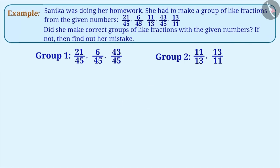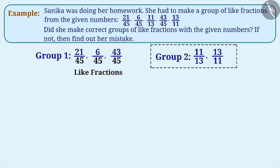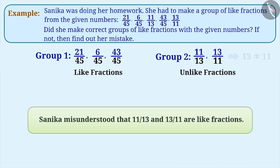We call two or more than two fractions as like fractions when their denominators are equal. In the first group, we can observe that denominators of all the fractions are equal. Therefore, the fractions in the first group are like fractions. In the second group, we see that the denominators are not equal, so these are not like fractions. If denominators of two or more than two fractions are not equal, they are called unlike fractions.